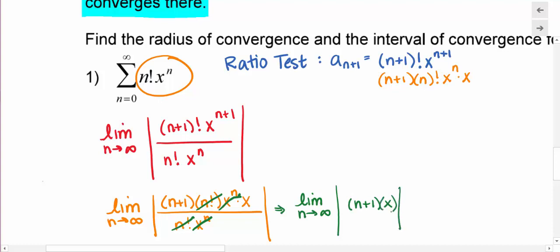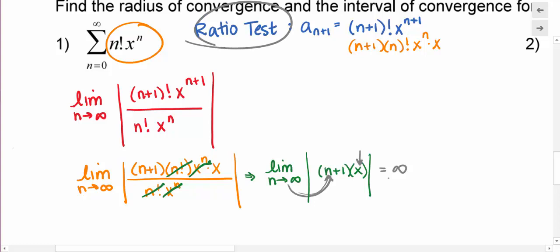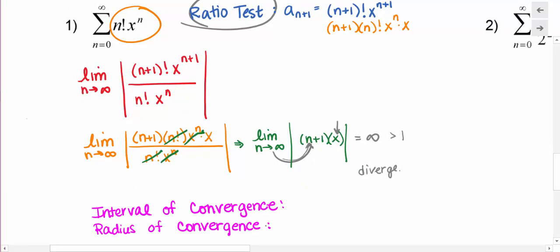Make sure you're only substituting infinity for n, not for x. Whatever finite value x is — say 3, 4, or negative one-half — if I multiply that finite value by an infinite value because n goes to infinity, this limit is infinitely big. Since the ratio test tells me that if that limit is greater than 1 my series will diverge, you might think there's no place where this series converges.